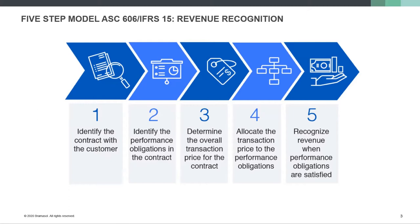If we take a step back — how do you exactly allocate the transaction price to the performance obligations? If you have two items, like selling a vehicle and maintenance for that vehicle, you now have to allocate the car and maintenance contract over the price that was paid. It might not be so direct that the price paid is actually the standalone selling price — that's why we want to talk today about what exactly this means.